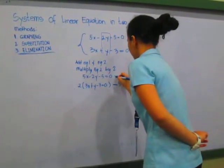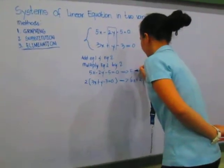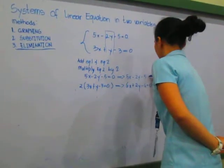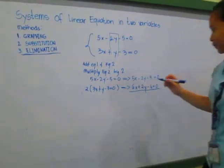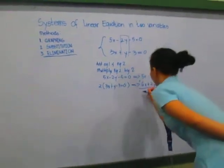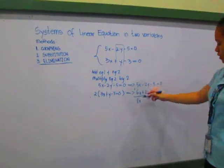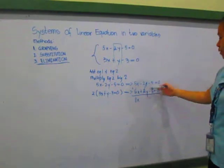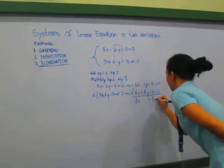And then just simply copy the first equation, which is equation 1: 5x minus 2y minus 5 equals 0. Then simply add them. 5x plus 6x is equal to 11x. Negative 2y plus positive 2y is equal to 0. Negative 5 plus negative 6 is equal to negative 11 equals 0.